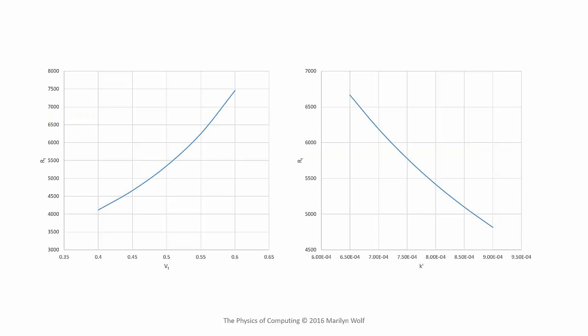These plots show how the transistor effective resistance varies with two parameters. The left-hand plot shows how it varies with threshold voltage — increasing the threshold voltage increases the transistor's effective resistance. The right-hand plot shows the variation in effective resistance with transconductance. As we increase the transistor's transconductance, its effective resistance goes down.